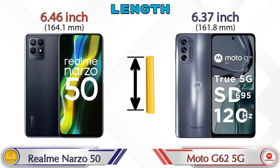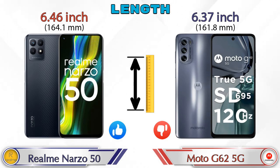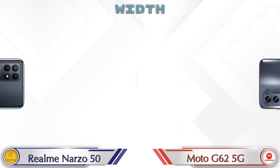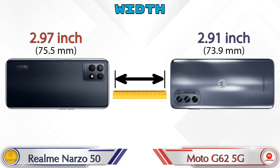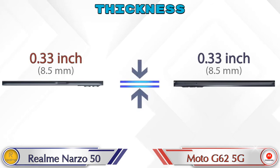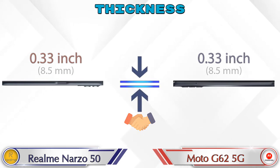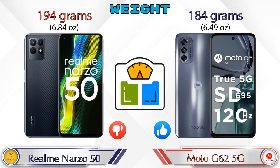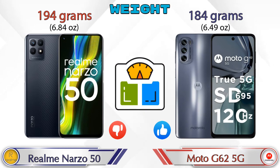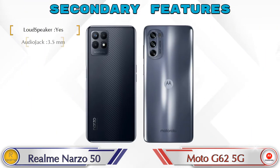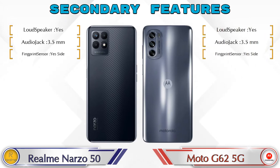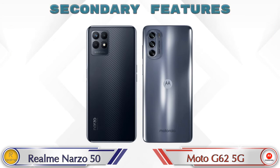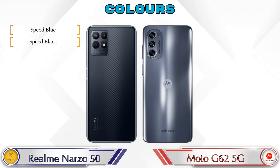Talking about length, Narzo 50 is 6.46 inches and Moto G62 5G is 6.37 inches, which is less than the Narzo 50. Width: Narzo 50 is 2.97 inches and Moto G62 5G is 2.91 inches, also less than Narzo 50. Both phones have the same thickness of 0.33 inches. Weight: Narzo 50 is 194 grams and Moto G62 5G is 184 grams.